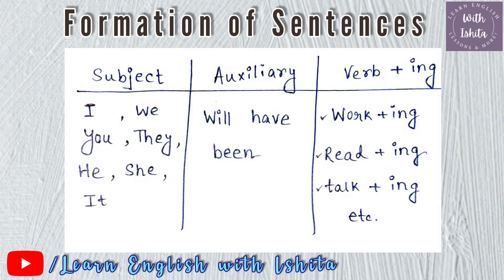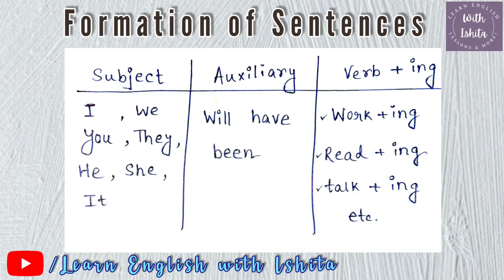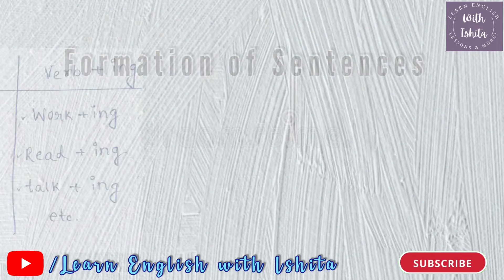Now let's talk about the formation of the future perfect continuous tense. The structure is: Subject — that means I, you, he, she, it, they, we — plus the auxiliary 'will have been', plus verb plus -ing. Because it is a continuous tense, we need to add -ing with the verb, like 'play' becomes 'playing'.